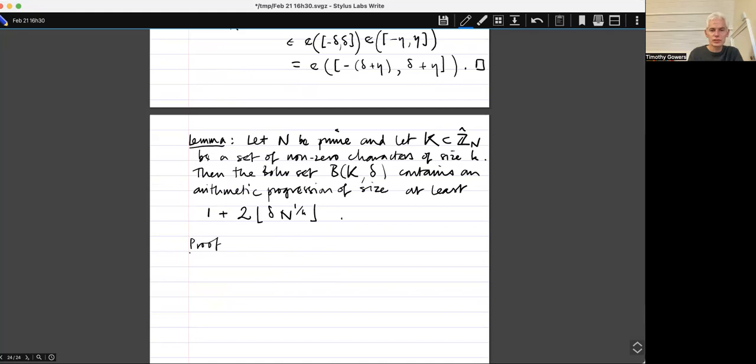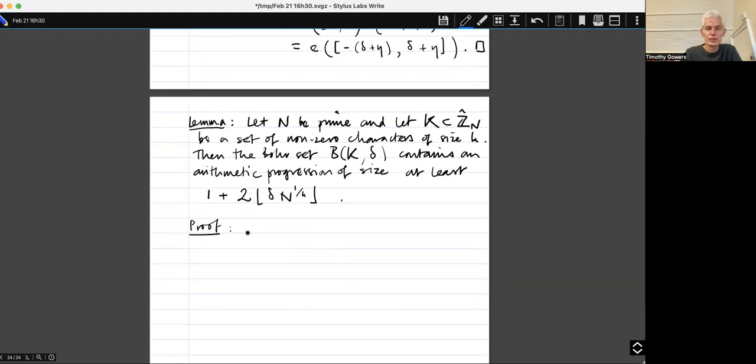If it's not I reserve the right to change it slightly at the end, but that's the rough way it depends. By the first lemma, if epsilon to the k is greater than one over n, then the Bohr set B K epsilon contains more than one element. And so contains a non-zero element. That's the really thing I care about.